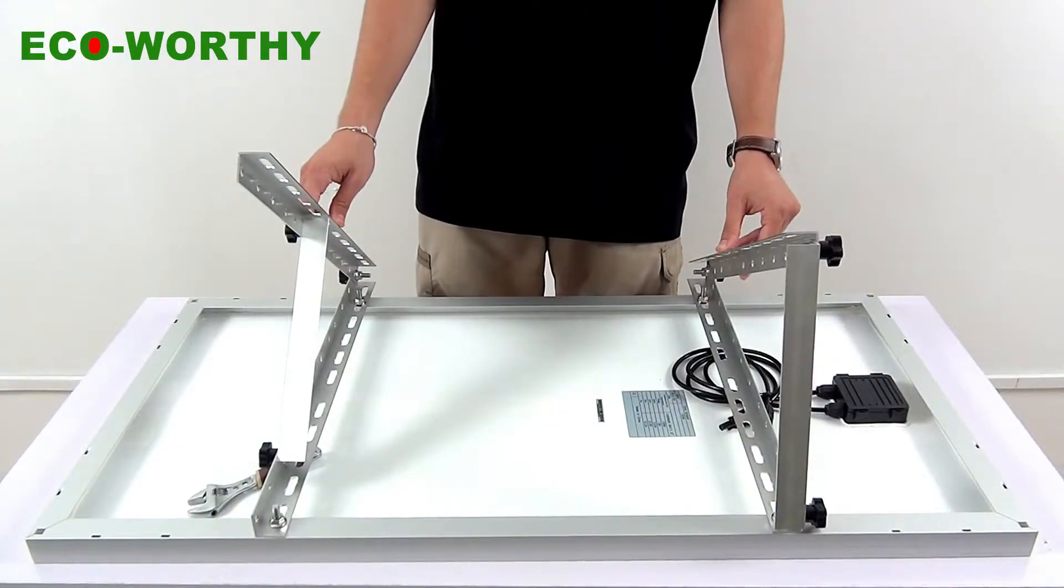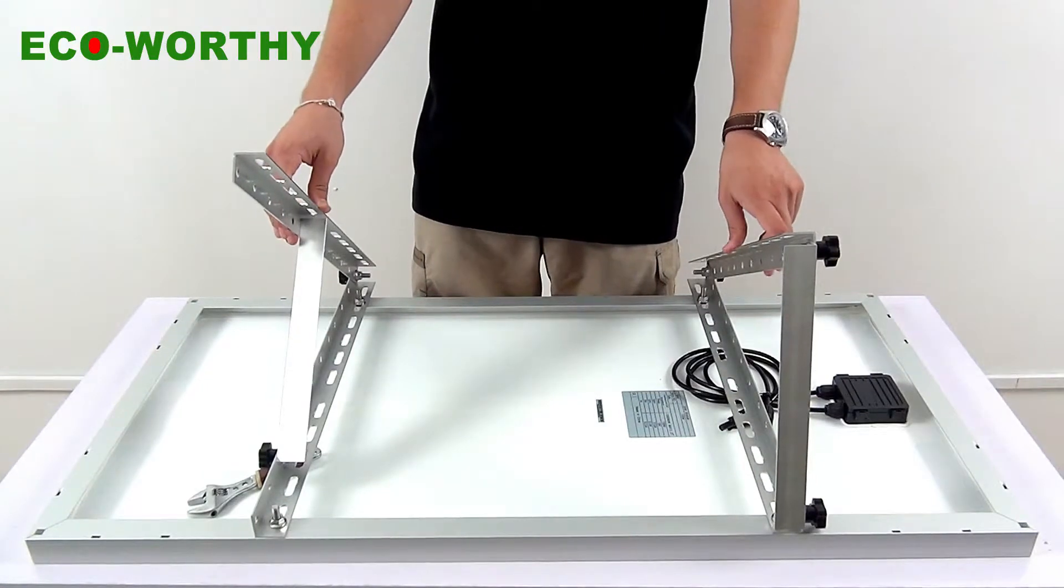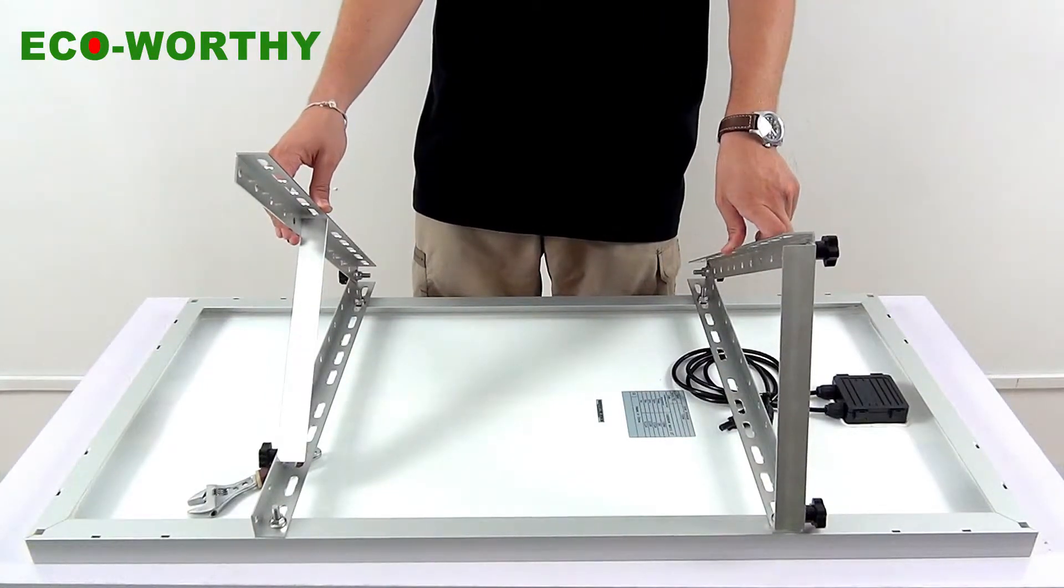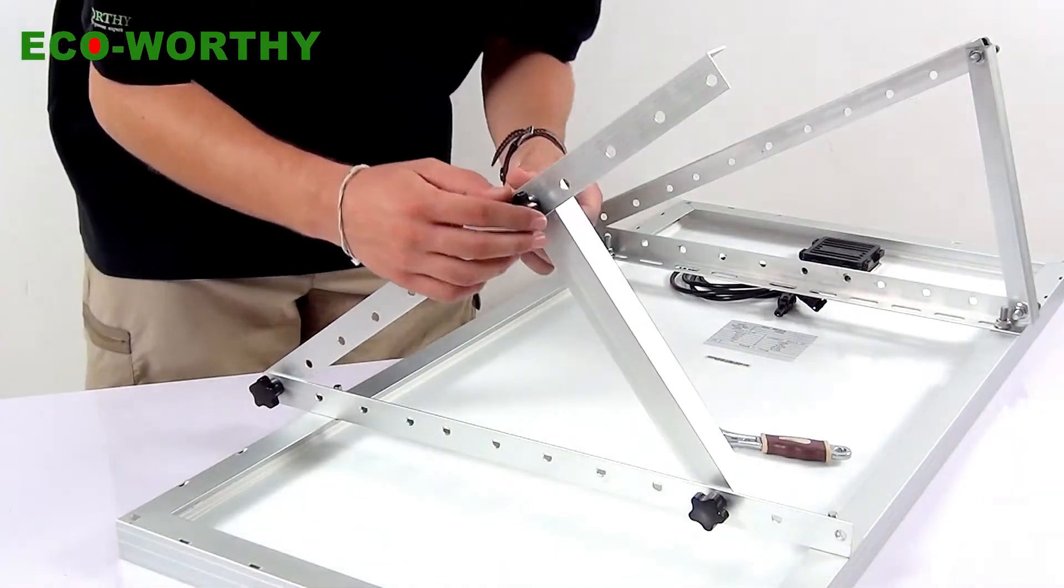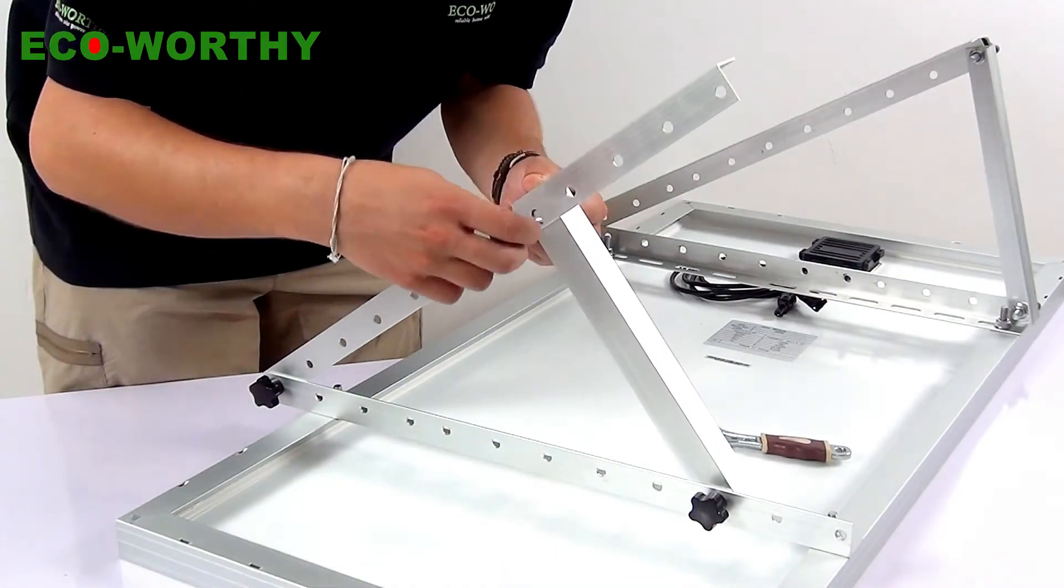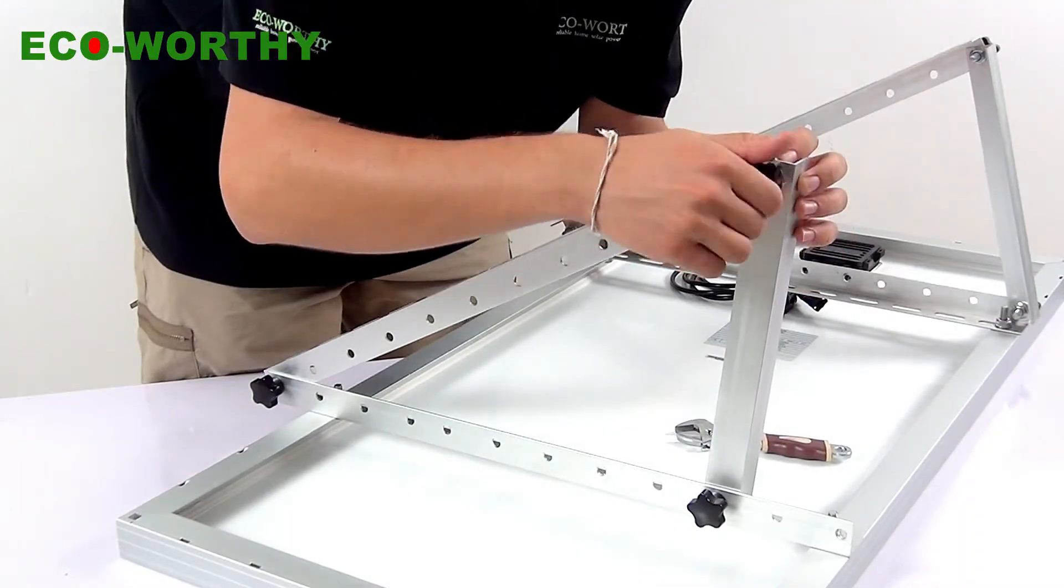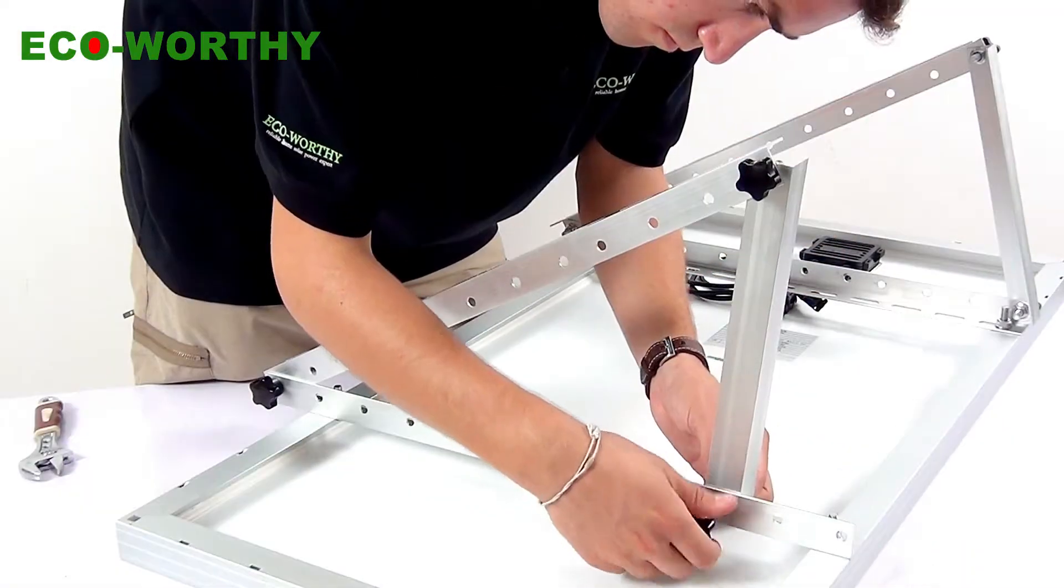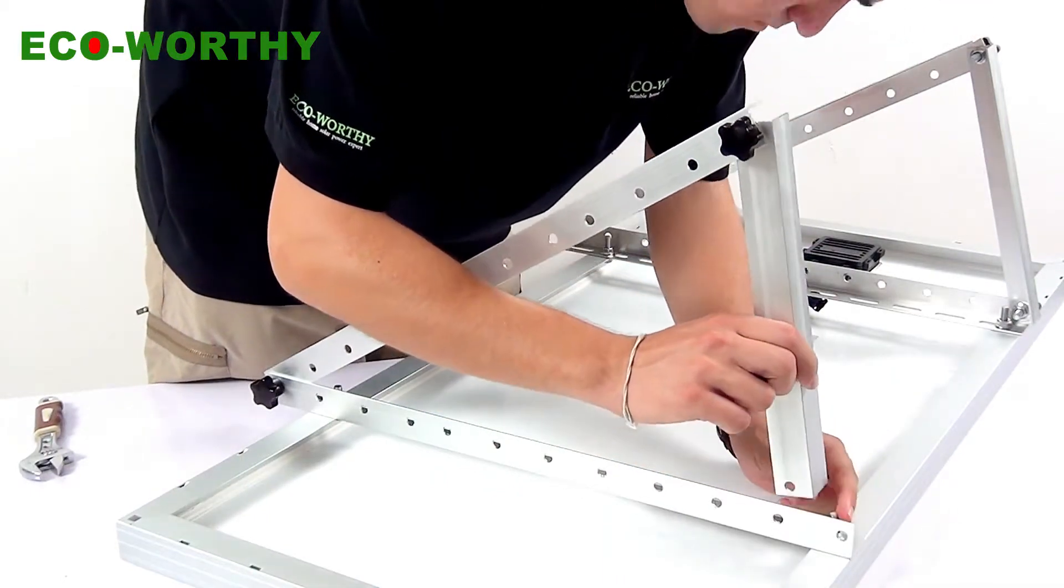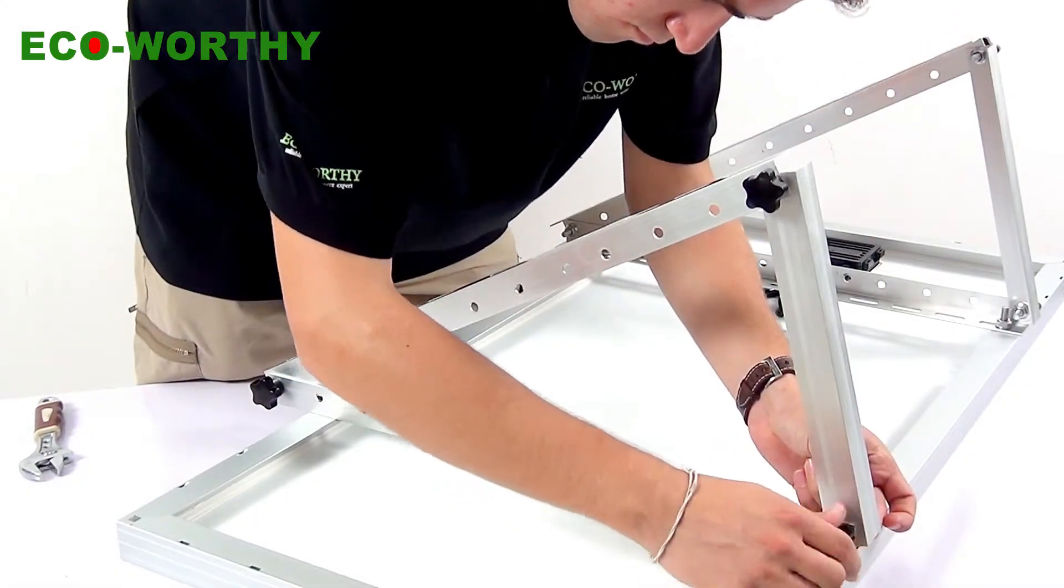You can adjust them anytime depending on the sun height. Let's change them to the same angle. It's simple steps. We only need to unscrew it, move it to the position we want, and make sure it screws tightly.